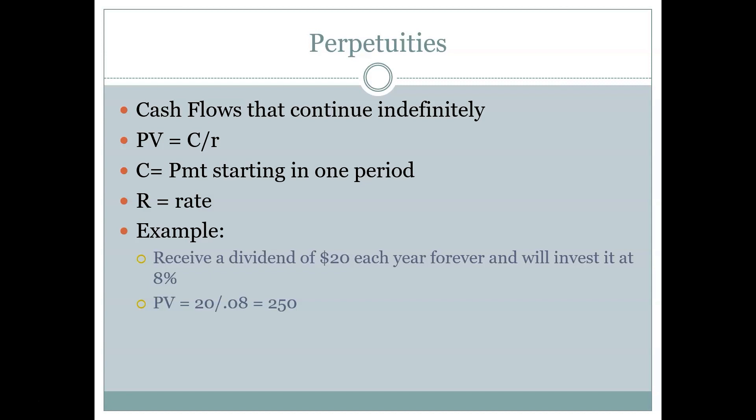Because math likes infinity, the formula for the present value of a perpetuity is much simpler than the formula for an annuity. In fact, it's so simple there isn't a calculator function for it. The formula is just the cash flow divided by the rate — C divided by R. The cash flow C is the payment starting next period, and R is simply the discount rate. There's no specific calculator function for perpetuities because it's just division.